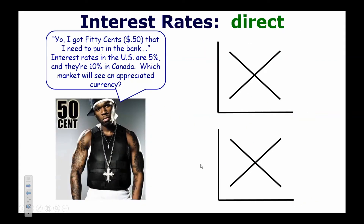Now, interest rates. The easiest way to think about it: 50 Cent wants to put his money in the bank. Interest rates in the US are 5%, while interest rates in Canada are 10%. If you had money to put in the bank, would you want to earn 10% or 5%? Obviously 10%. So we're going to show the effect on the Canadian dollar versus the US dollar.